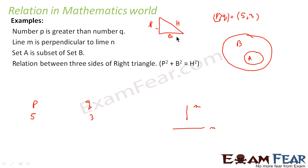So this is one more example of relationship at the mathematical level. Relation is nothing but a connection between two or more than two objects. It should have a pattern and involve two or more objects. When I say P is greater than Q, I can take any P and Q that follows that property. Line M perpendicular to line N is a relationship. Set A is a subset of set B is a relationship. And P² + B² = H² is a relationship between the three sides P, B, and H of a right triangle.